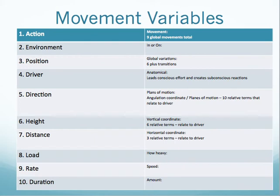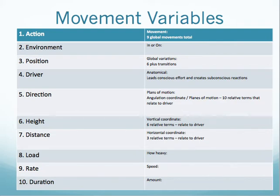Now let's jump into the movement variables — essential lingo to understand. Action: there are nine global movements — gait/walking, squatting, lunging, reaching, pushing, pulling, lifting, jumping, jogging, and running. We can build exercises based on these. A push exercise for upper body might be a chest press or pushup; a pull exercise might be any type of row. For the lower body, a push could be a squat or leg press machine; a pull might be a hamstring curl or four-way hip. A lift combines things — think about a power clean, which is a pull, a push into the ground, and a lift overhead.